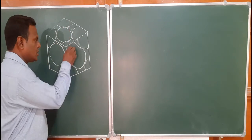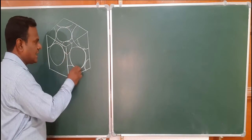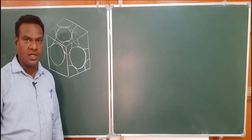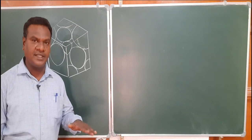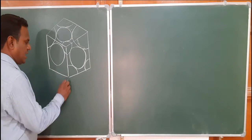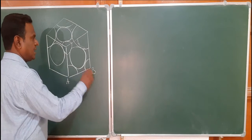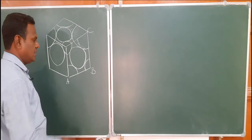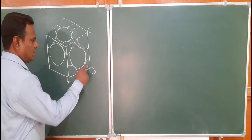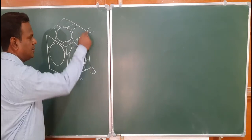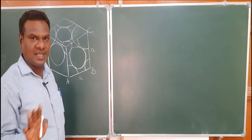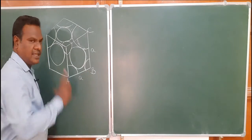In the diagram, this is the face-center atom and this is the corner atom. The corner atom touches the face-center atom. Suppose this is A, and this is B and C. The edge length AB is the edge length A. Similarly, BC edge length is also A — all edge lengths of the cube are the same and represented as A.